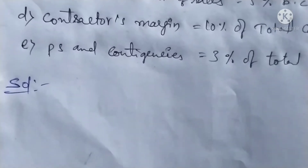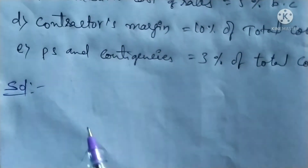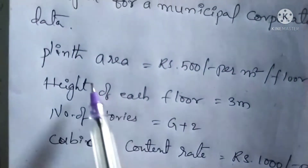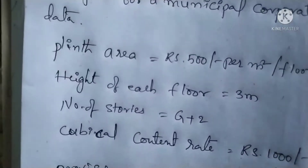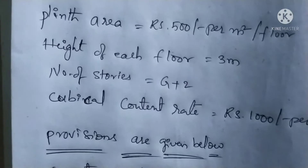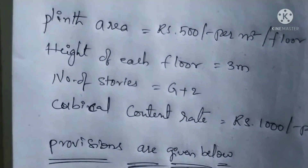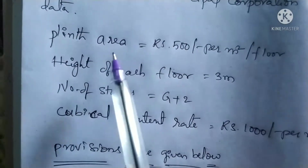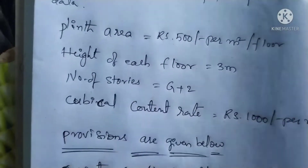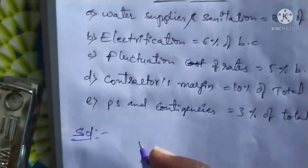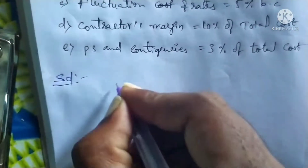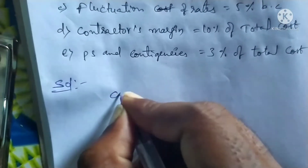PSN contingency charges is 3% from total cost. Now let's start the solution. First of all we have to calculate the cost of the building. The cost of the building is calculated from the formula: cost of building equals cubic content rate multiplied by cubic content.